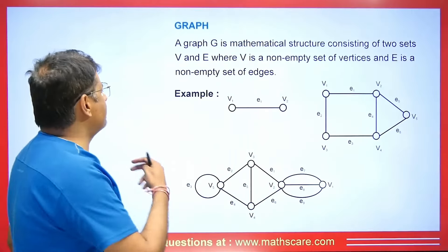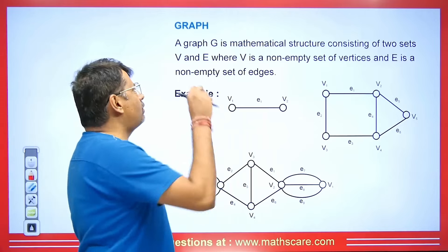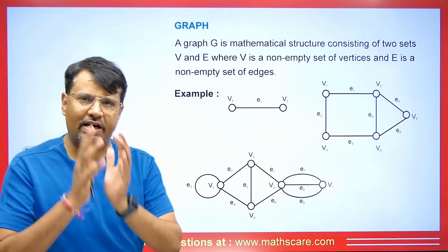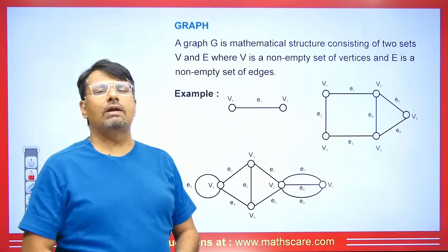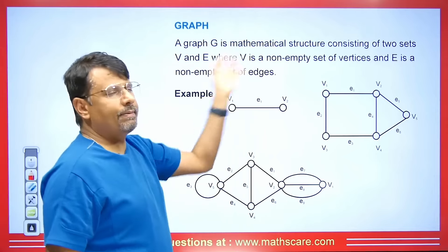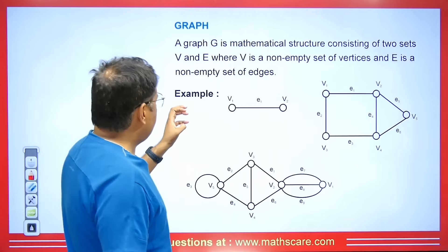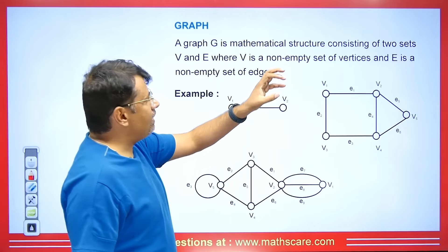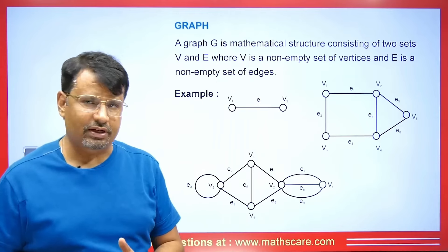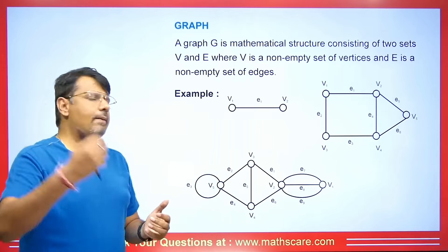Today I am going to tell you the basic terminology that is used in graph theory. First of all, let's see what a graph is. The graph G is a mathematical structure consisting of two sets V and E, where V is the set of vertices and E is the set of edges. The representation of this is the graph. Here the sets E and V are always non-empty sets, because it will be a graph only if they are non-empty.